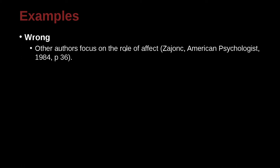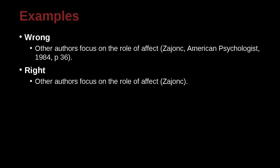Other authors focus on the role of affect. The citation shown is: Zank, American Psychologist, 1984, page 36. This doesn't look right for MLA at all. In MLA we keep it simple — just the author and the page number. We don't include the journal name, the year, or any other details. No commas either. It's very simple.